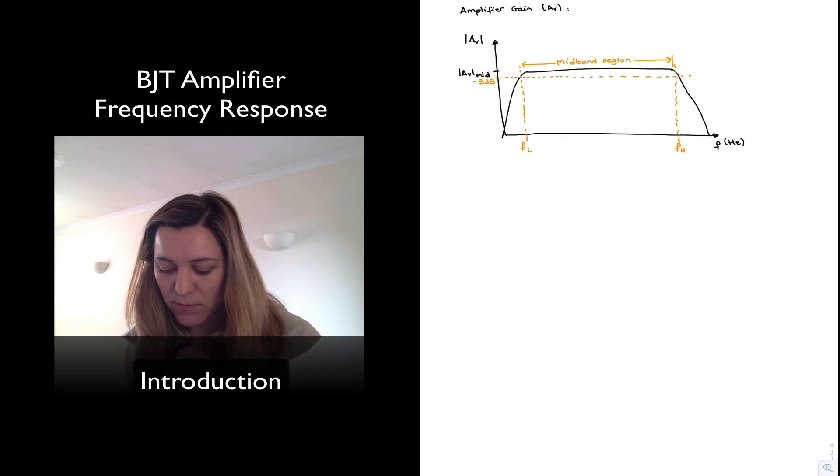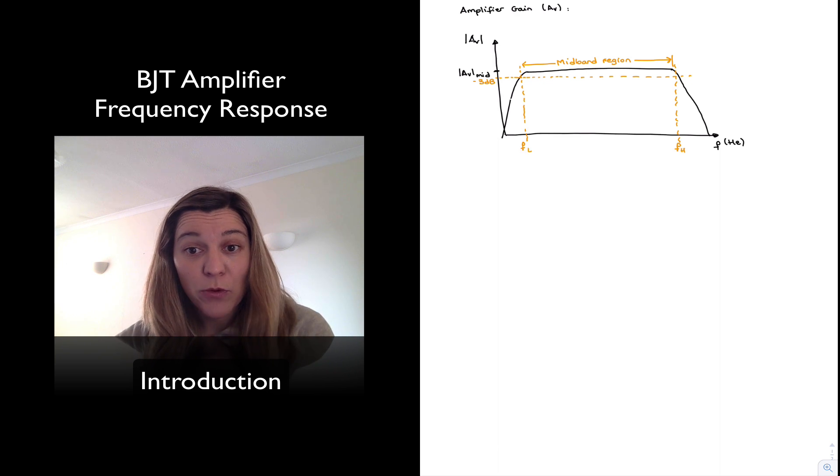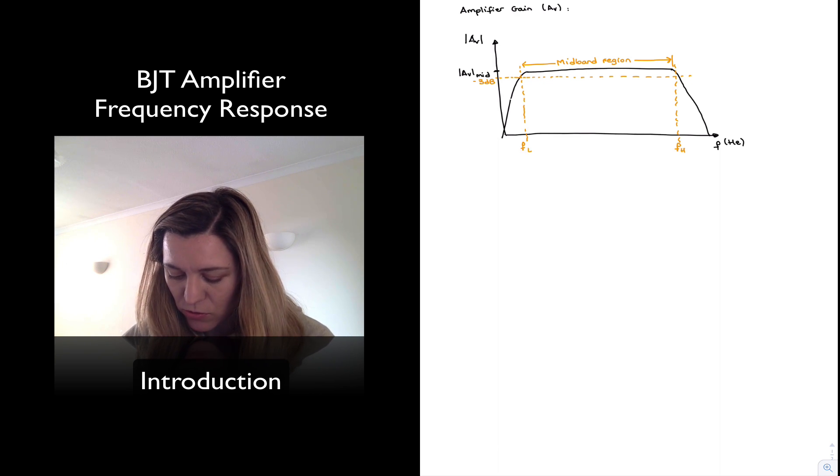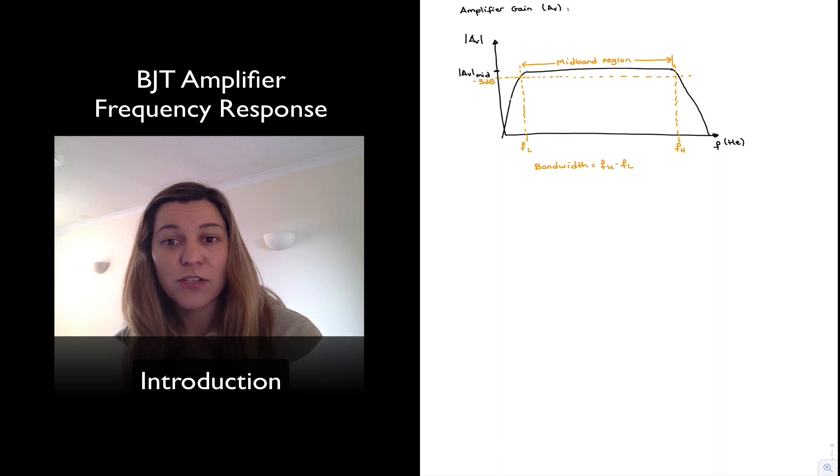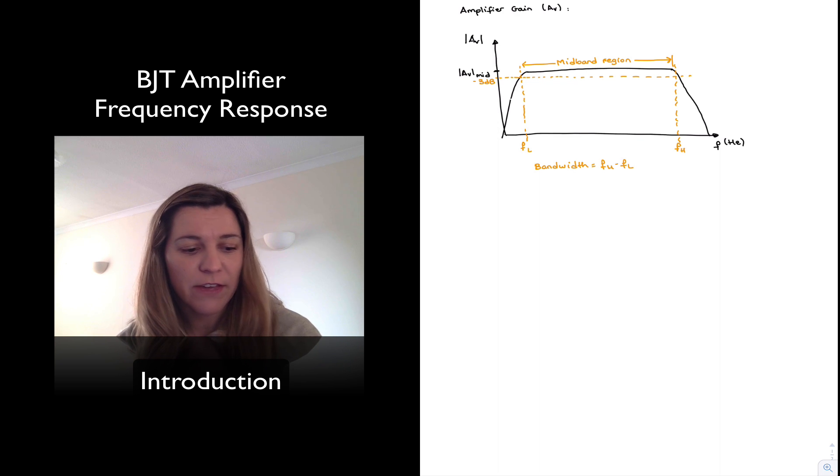Now, FH minus FL is defined as the bandwidth of the amplifier. It's the width of that mid-band region, and so bandwidth equals FH minus FL. And normally, if the high cutoff frequency and the low cutoff frequency are very distant, the high cutoff frequency is going to be much larger, four, five, six orders of magnitude larger, and we can approximate the bandwidth as simply the value of FH.